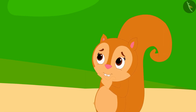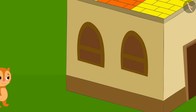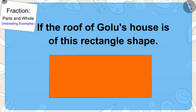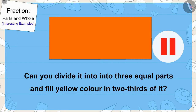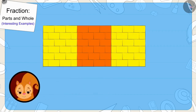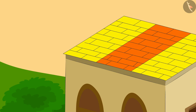Chanda started wondering where she had seen such a roof before. Then she remembered that she had seen such a roof over her friend Golu Panda's house. Chanda immediately reached Golu's house. If the roof of Golu's house is of this shape, can you divide it into three equal parts and fill yellow color in two-thirds of it? You can find the answer by pausing the video. Well done children! In this way we can fill yellow color in two-thirds of the roof.